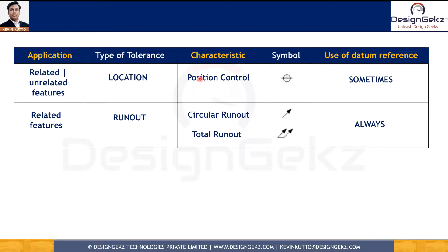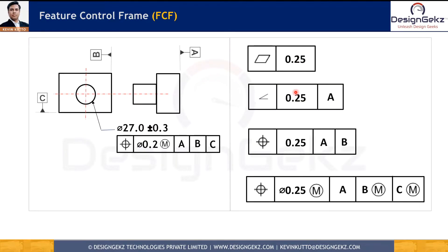We also have Location, which includes Tolerance of Position. Tolerance of Position will have a datum reference in most cases, except with self-implied datums — when we use a self-implied datum, we don't use a datum reference letter in the feature control frame. We also have Runout Controls — Circular Runout and Total Runout — which control form and axis variation, meaning the location of one feature of size with respect to another coaxial feature of size. Runout will always have a datum reference.